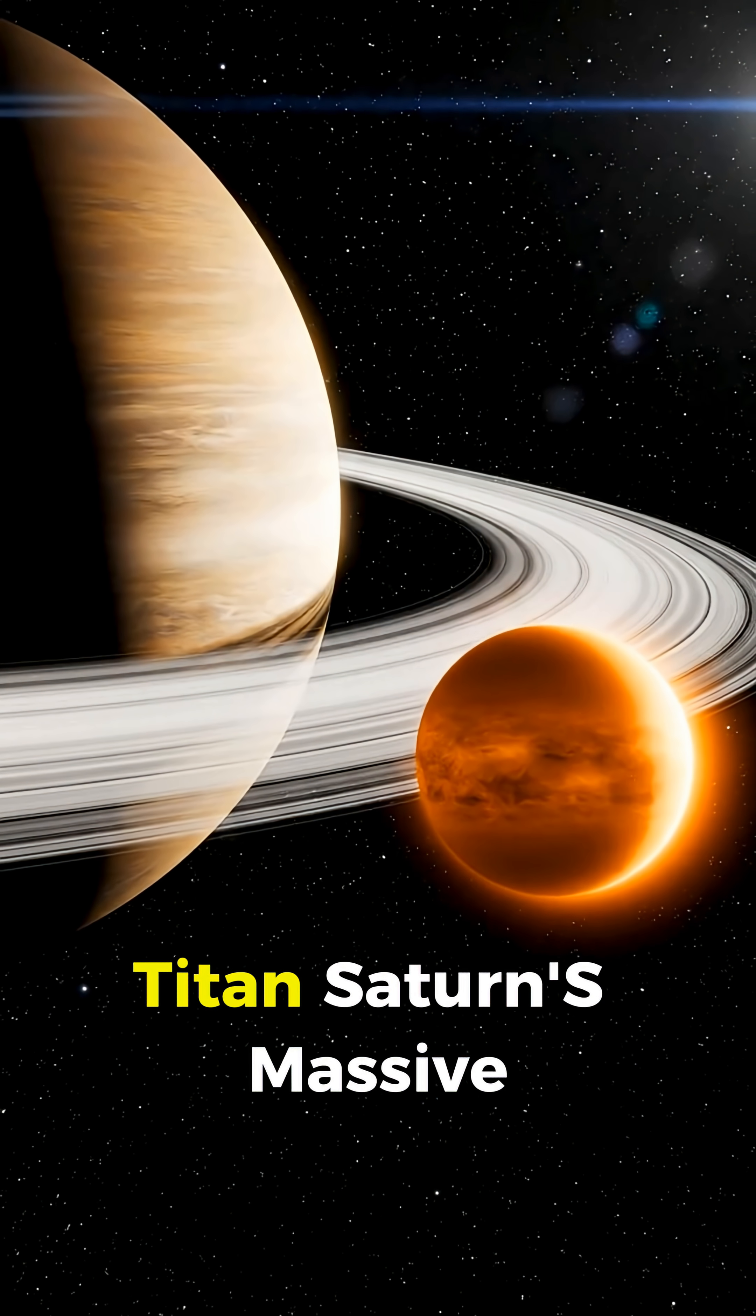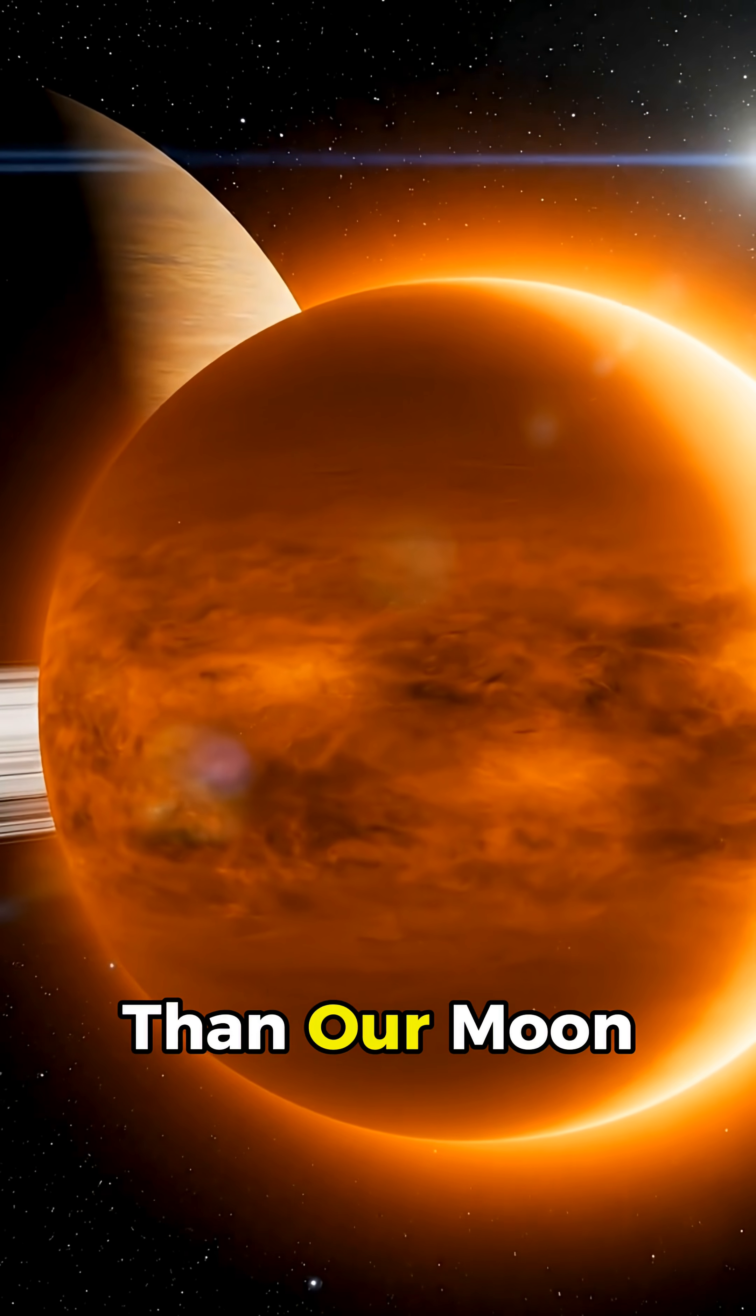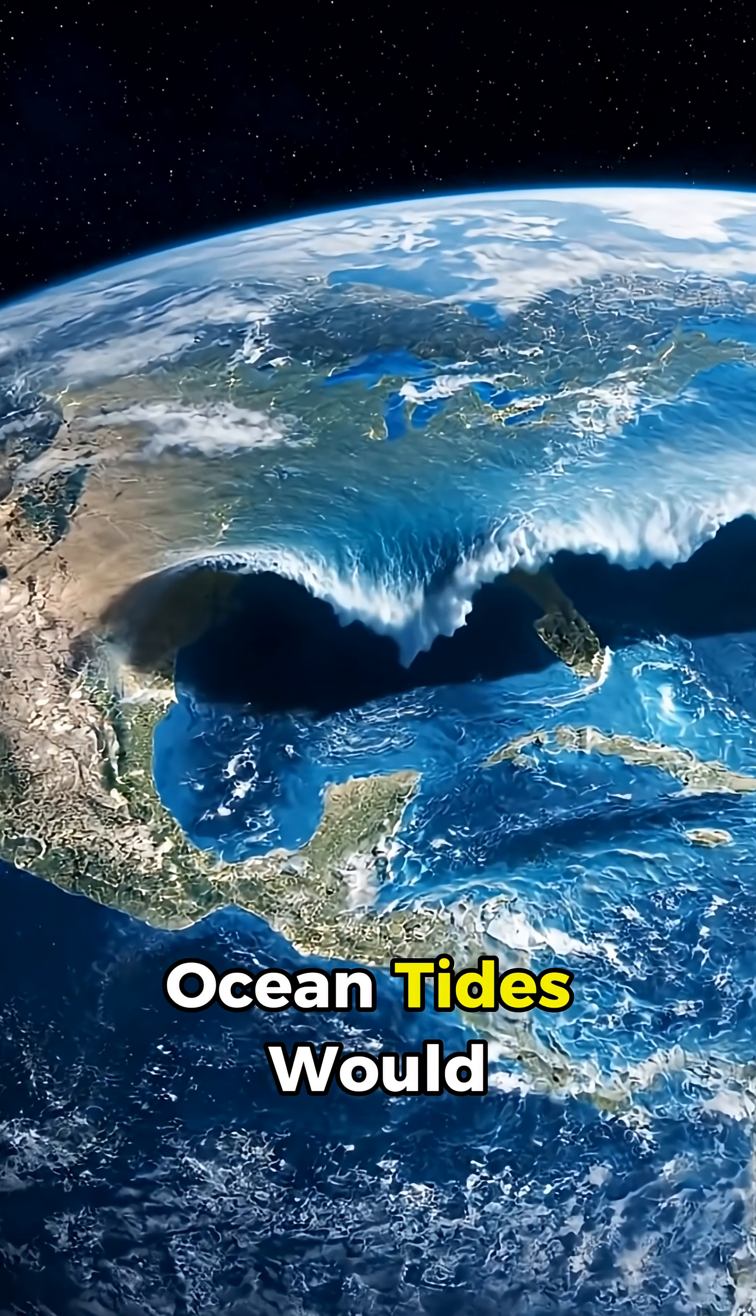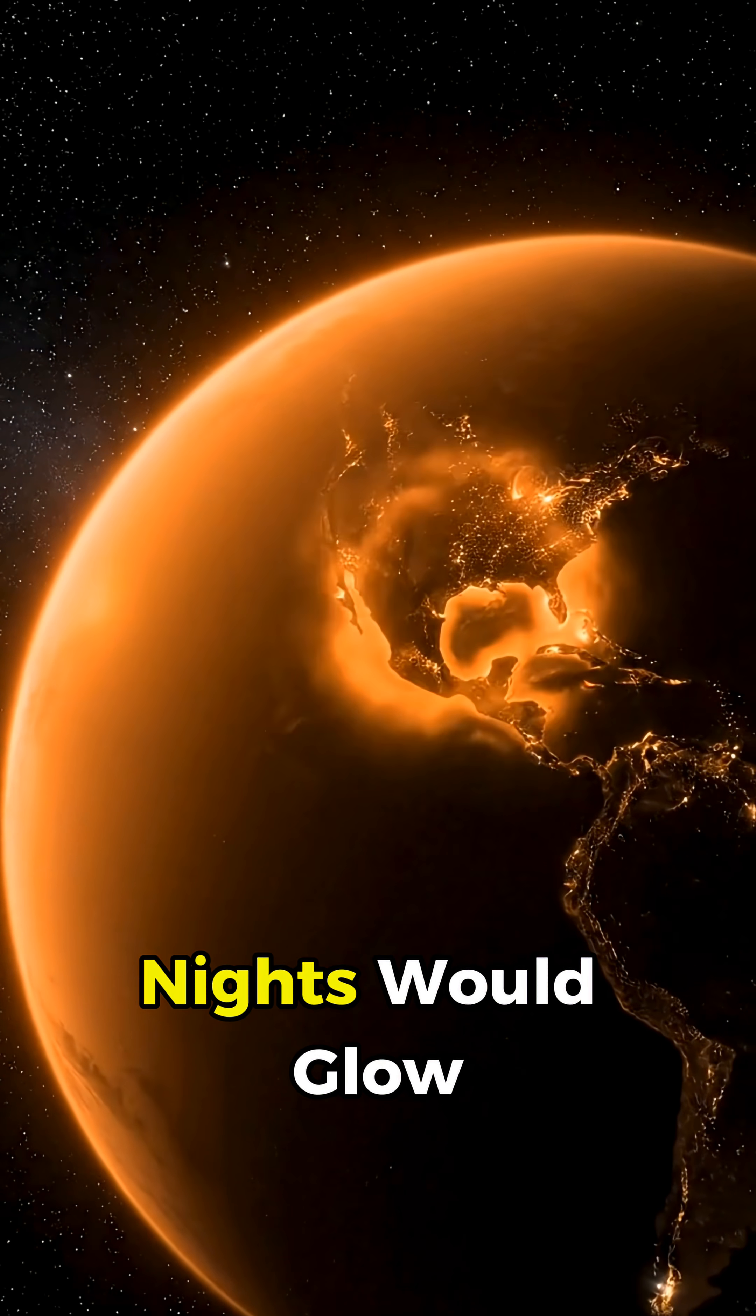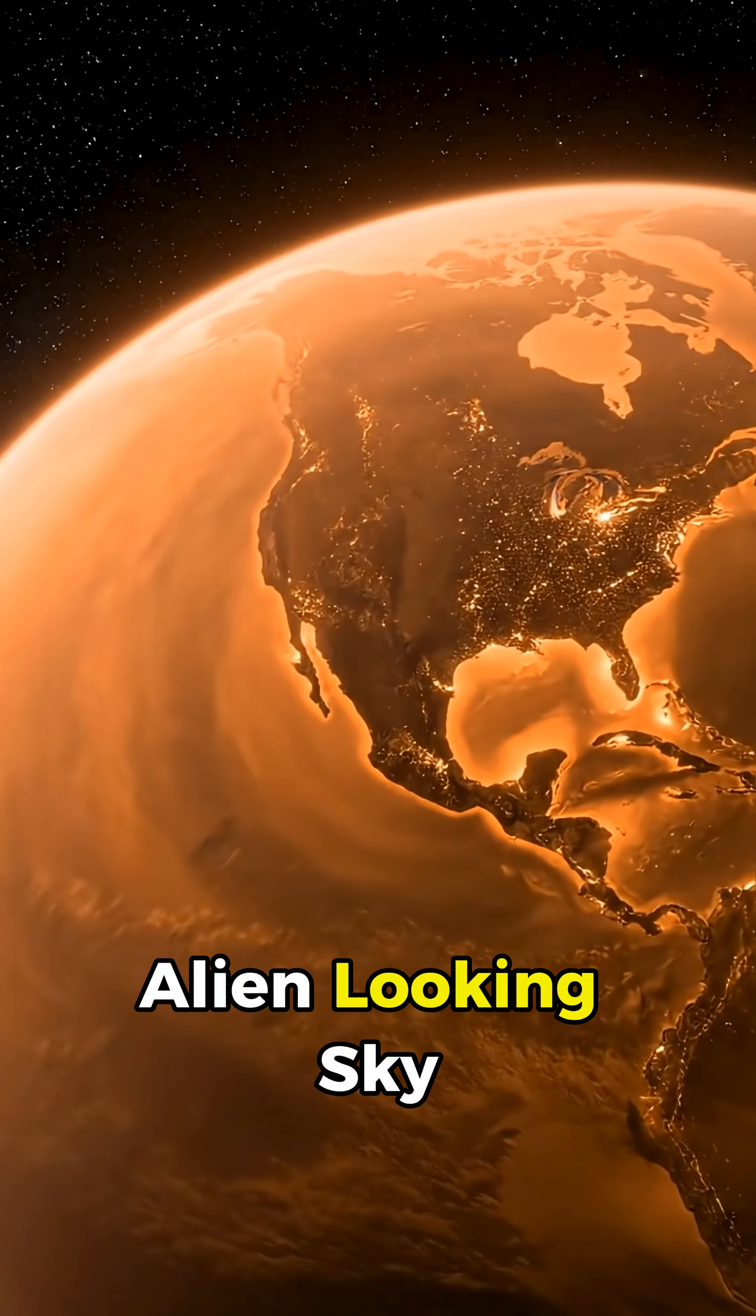Let's start with Titan, Saturn's massive orange moon. Titan is larger and much heavier than our moon, so its gravity would pull harder on Earth. Ocean tides would grow huge, surging far inland and flooding coastal cities every day. The silver lining? Nights would glow with a thick orange tint, giving Earth an alien-looking sky.